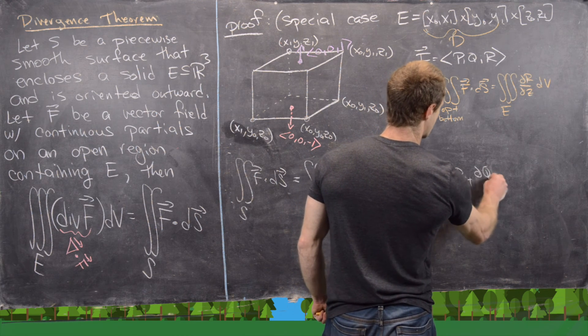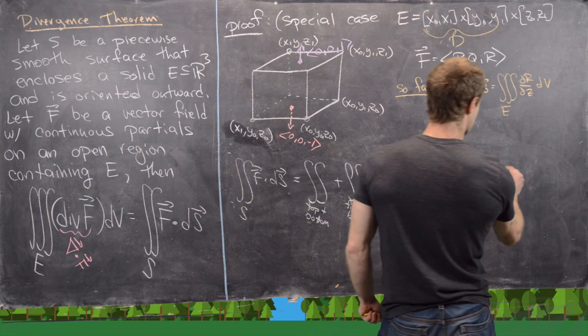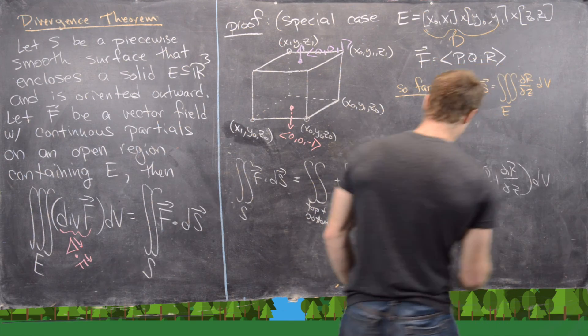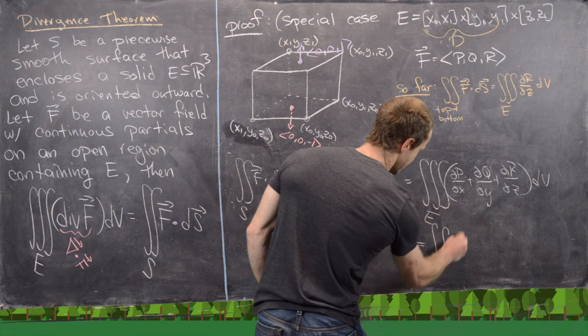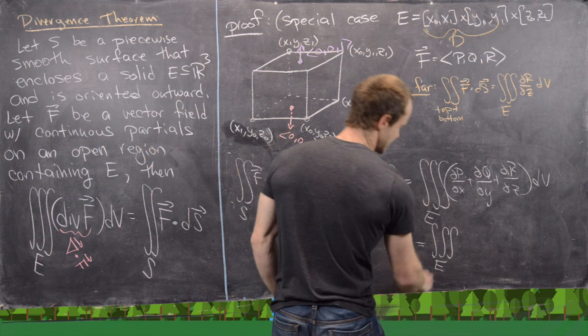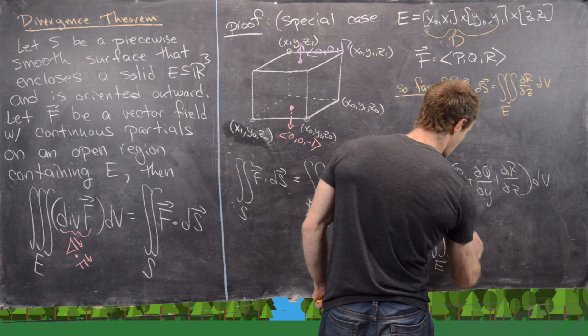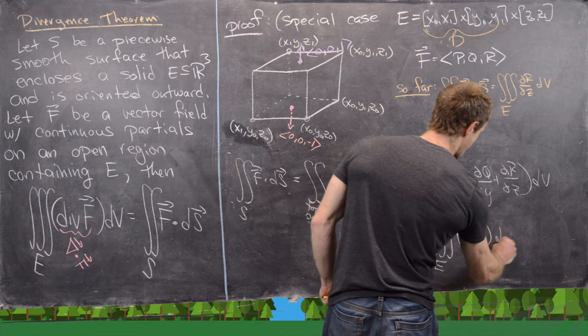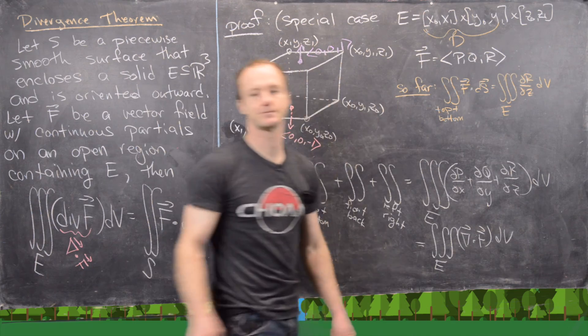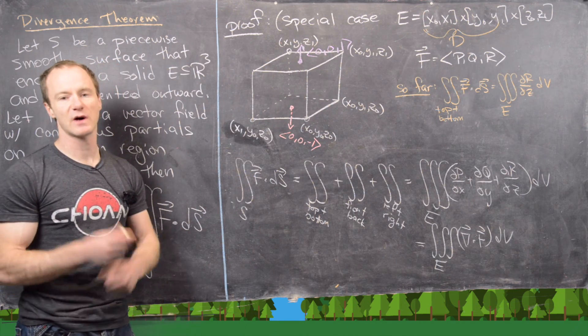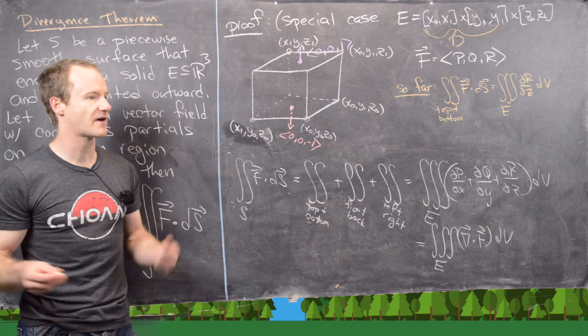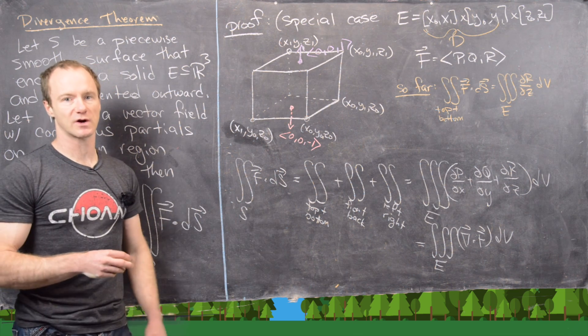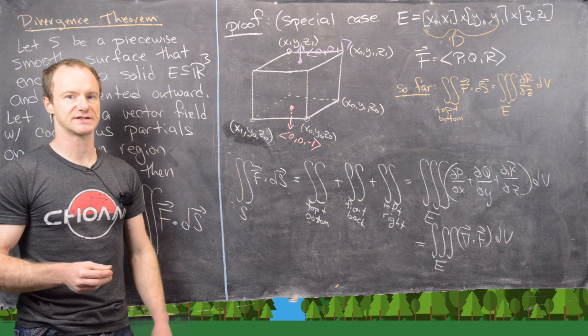So this will all work down to the triple integral over E of ∂P/∂X plus ∂Q/∂Y plus ∂R/∂Z dV. But that's exactly the definition of the divergence. So this is the triple integral over E of the divergence of F, in other words, del dot F dV. And that finishes the sketch of this proof. So we'll have some more videos where we verify the divergence theorem on some examples and also work out other examples. This is a good place to stop.